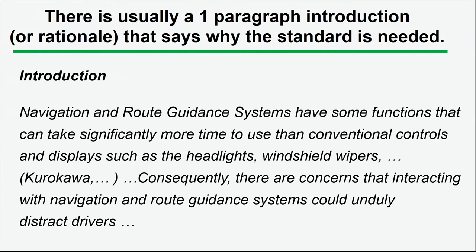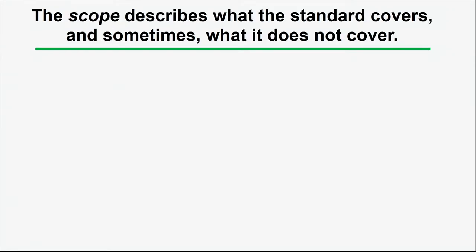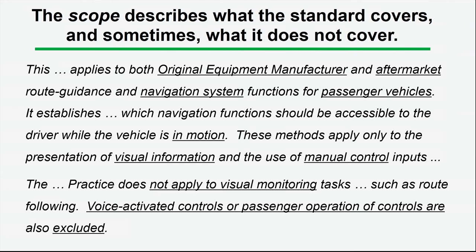Sometimes the introduction may just provide an overview, and a rationale can be a separate section. It is important to have a strong argument for why a particular standard is needed. In this case, it's actually a recommended practice. Also, there's some information describing the scope. For SAE J2364, it applies to original equipment — meaning the manufacturer who made the product must comply — but also aftermarket devices, such as navigation systems built into the car as well as those users might plug in or use on their phone.